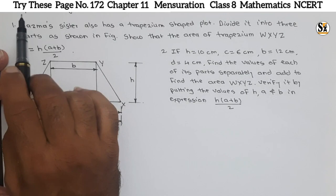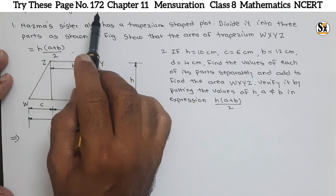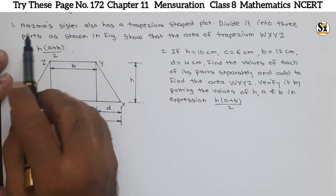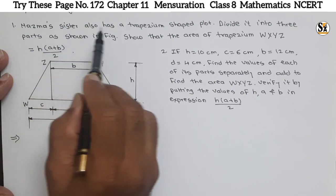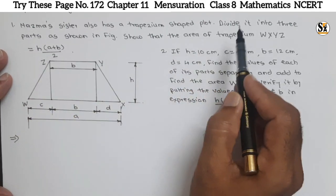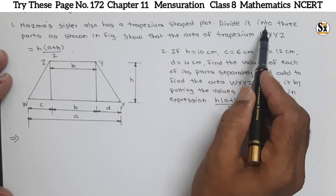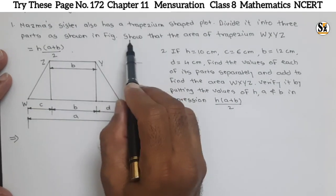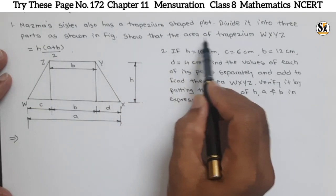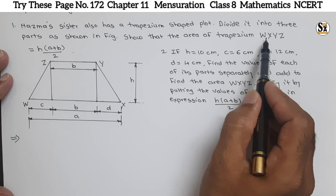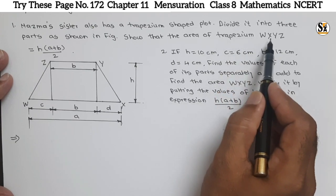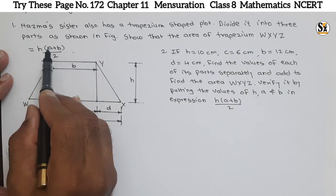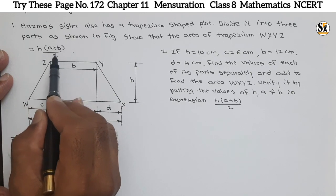See the question under the 'Try This' section, page number 172, chapter Mensuration. The question is: Najma's sister also has a trapezium-shaped plot. Divide it into three parts as shown in the figure and show that the area of trapezium WXYZ is equal to h into bracket (a plus b) divided by 2.